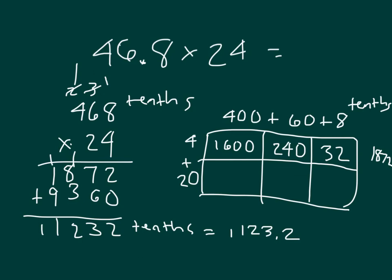And 20 times 400, that would be 8,000. 20 times 60 is 1,200, and then 20 times 8 is 160. Adding those together, 9,200, and then 9,360, which does match up my partial product in my standard algorithm.